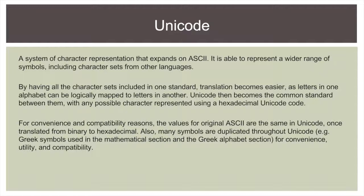Unicode is a character representation system that expands on ASCII. They found ASCII only works for English, so we need a lot more characters — especially for mathematical notation and for languages such as Russian, Greek, Chinese, Japanese, Korean, and Arabic. By having all character sets in one standard, translation becomes easier because we can map certain letters or combinations of letters to other languages. Unicode then becomes the common standard between all languages, with any possible character represented using a hexadecimal Unicode code.